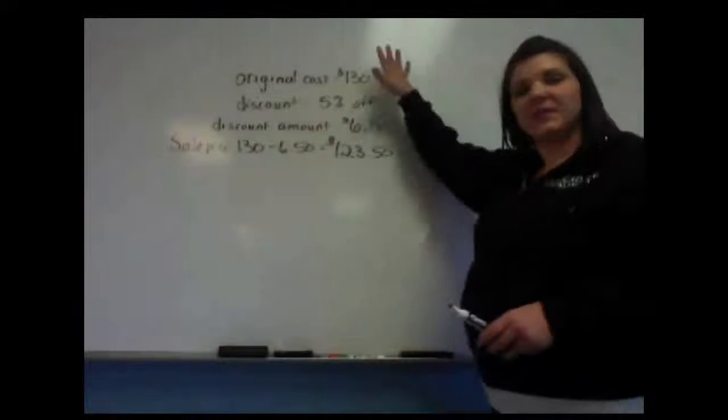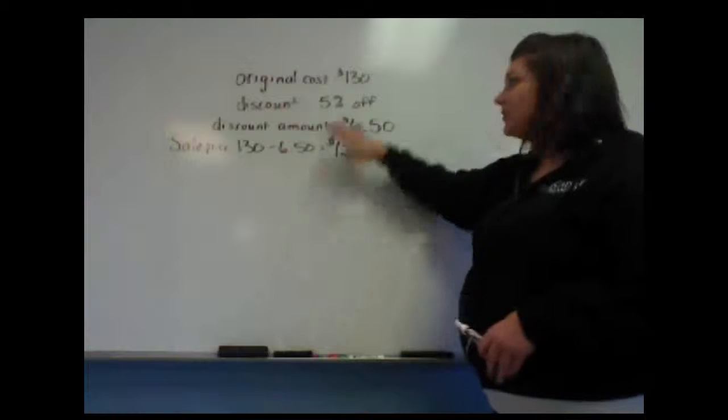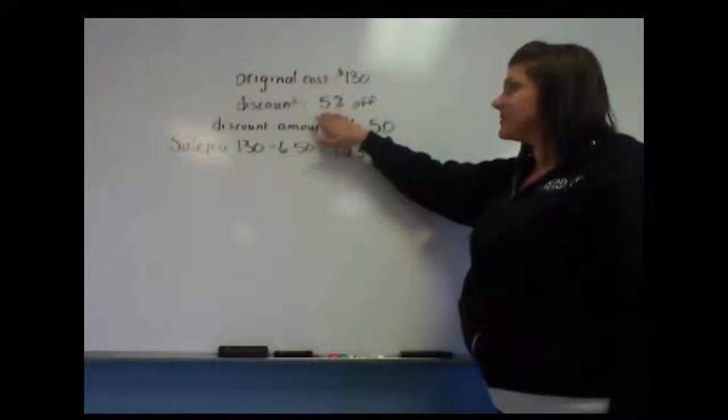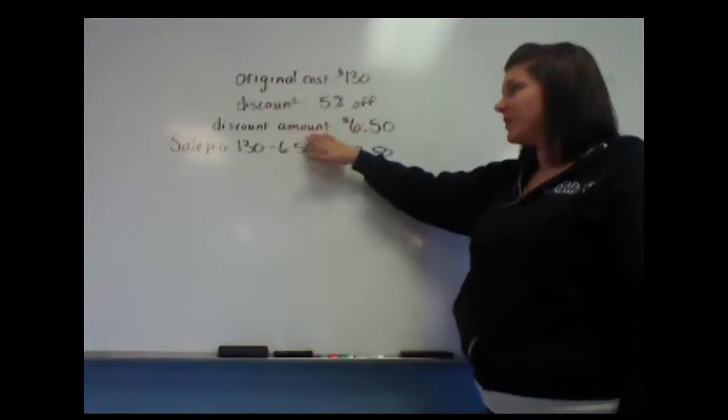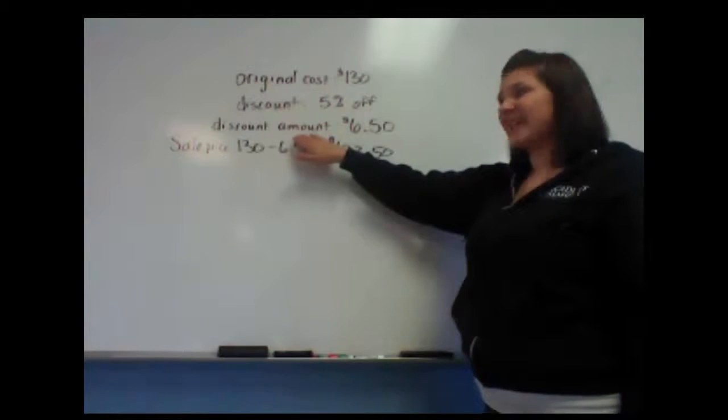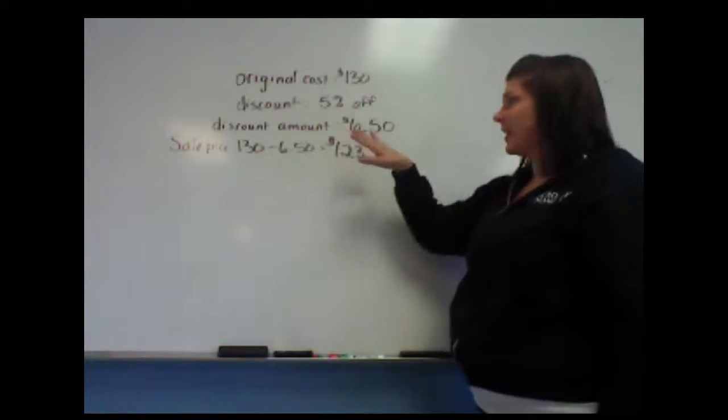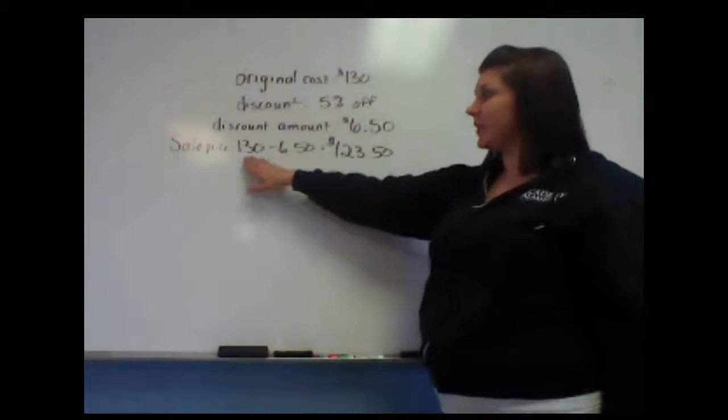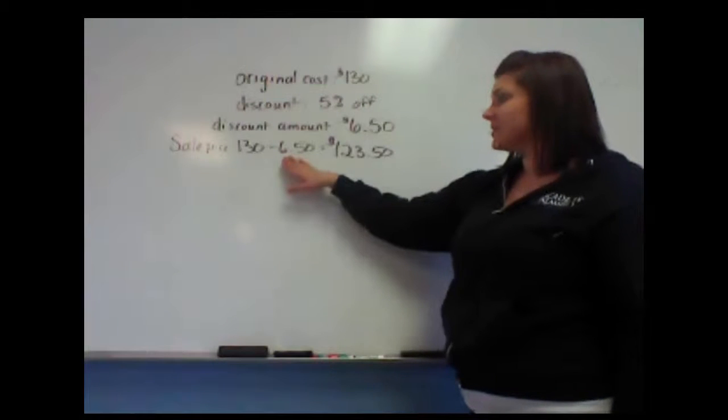Okay everyone, so this was the results from our last video where we had something that originally cost $130, the discount was 5%, and in our last video we learned how to calculate that discount amount. We figured that 5% of $130 was $6.50, so our sale price would be $130 minus $6.50.